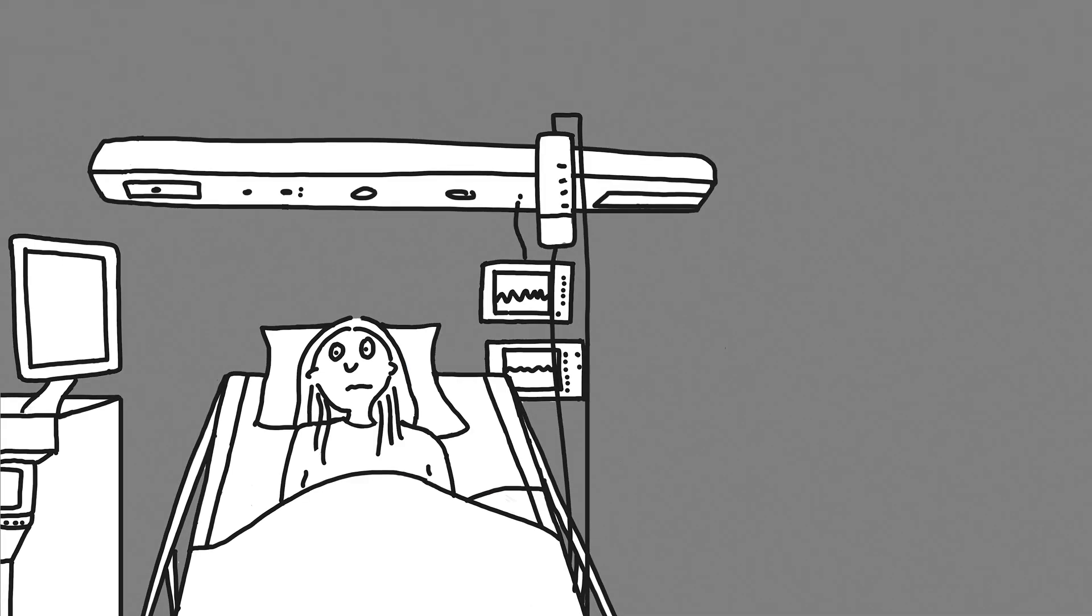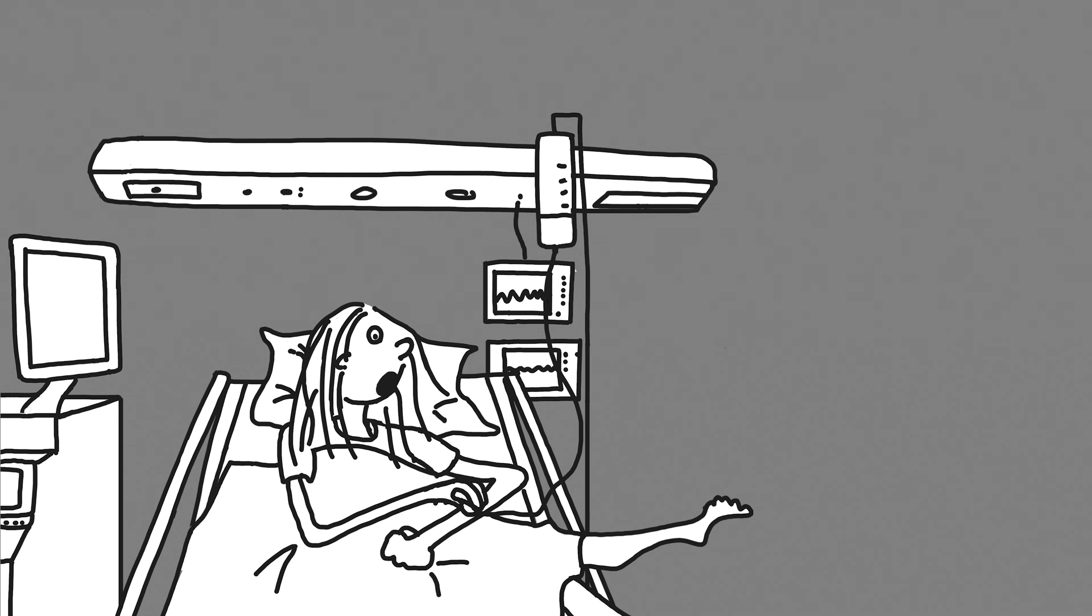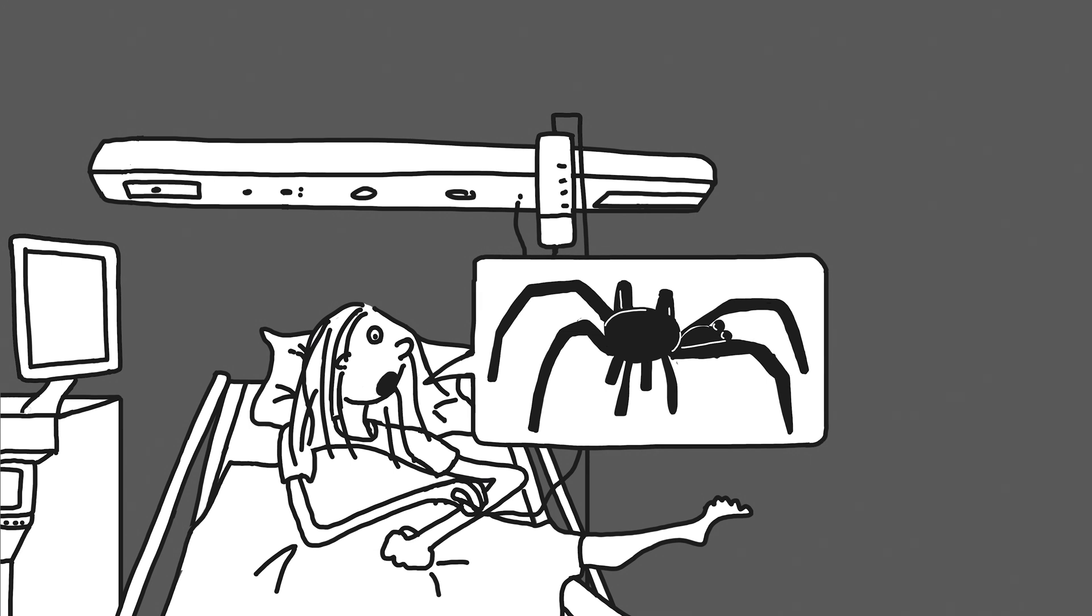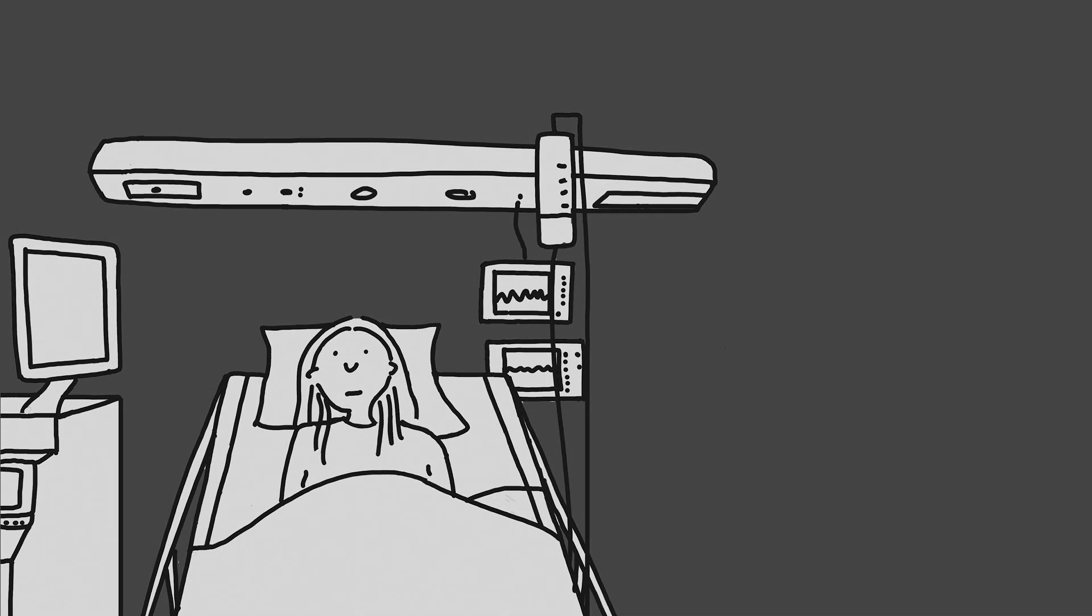In the evening, Doreen is getting more and more agitated. She wants to get out of bed and pulls off her drip. She's in panic as she warns for spiders on the wall. Doreen suffers from hallucinations.